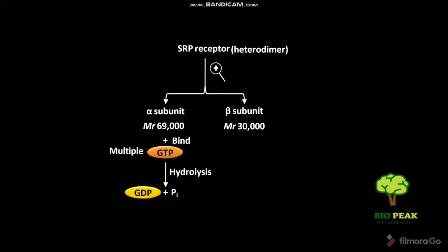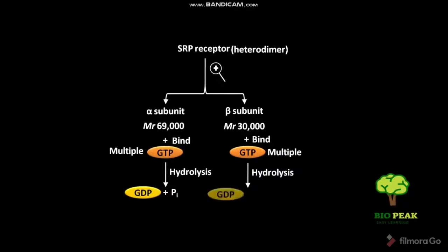Like the alpha subunit, the beta subunit also binds to multiple GTPs. The GTPs then undergo hydrolysis to produce GDPs and Pi.